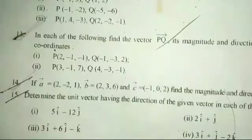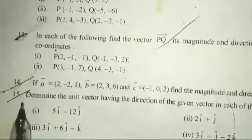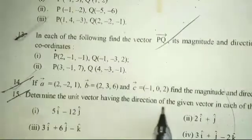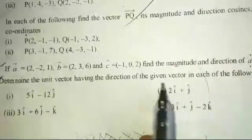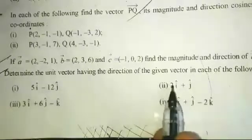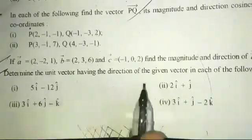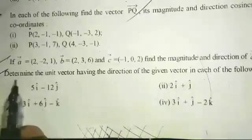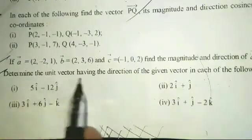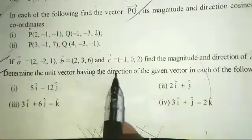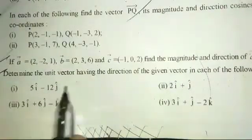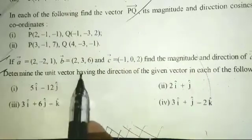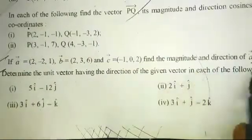So this is the answer. Now there is question number 15: determine the unit vector having the direction of the given vector in each of the following problems. This involves finding the unit vector in a given direction.